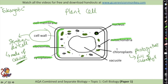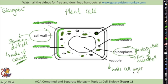The final extra structure in plant cells is the vacuole. So we've had cell wall and chloroplasts, and the vacuole holds cell sap - water and sugar held within this vacuole - and it helps keep the cell in a particular shape.